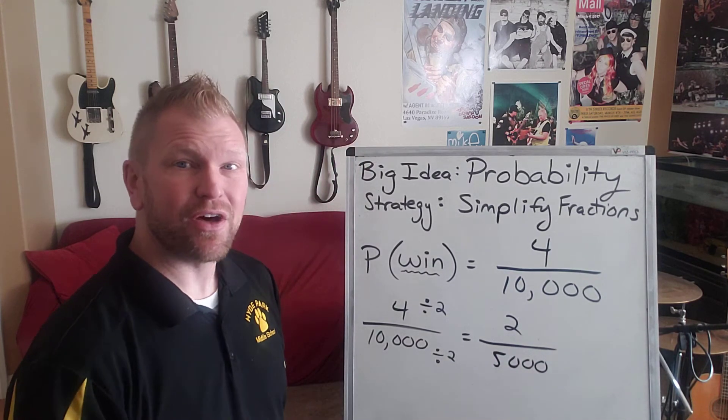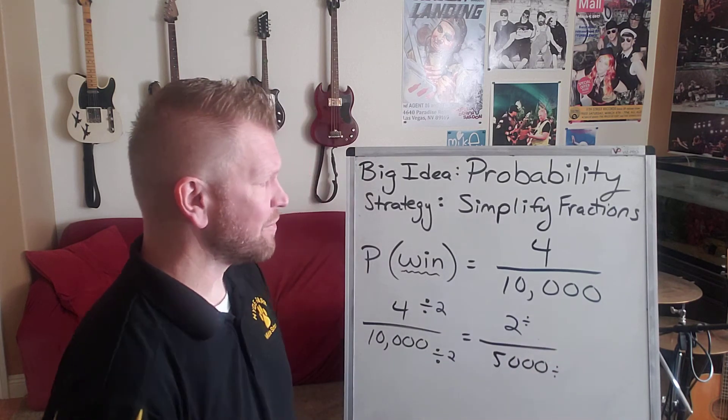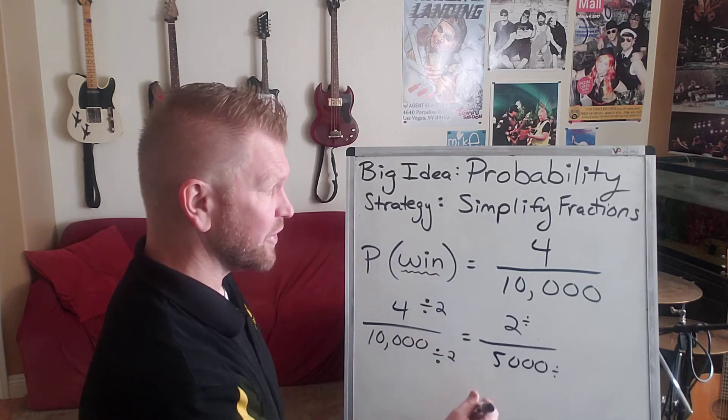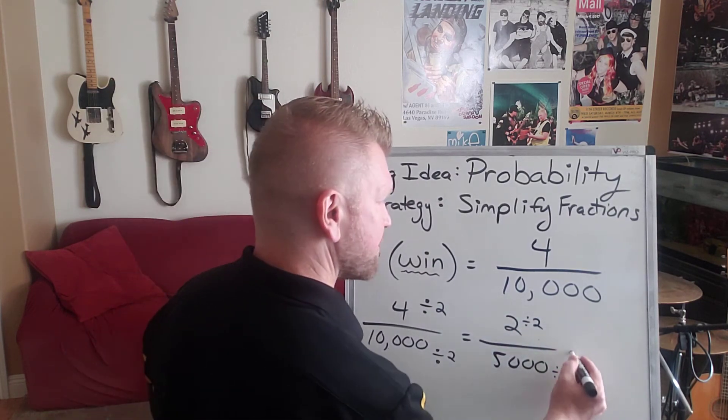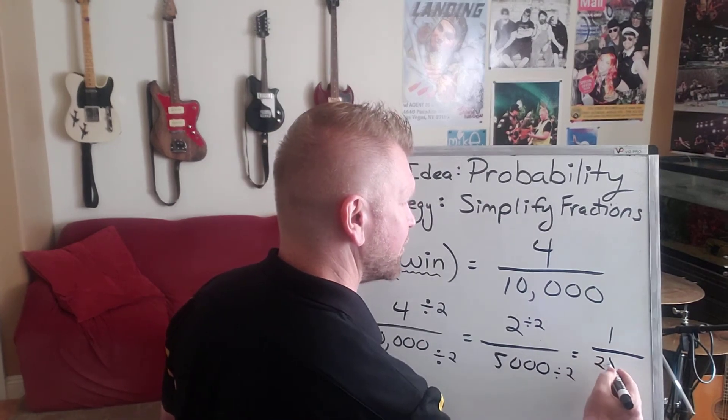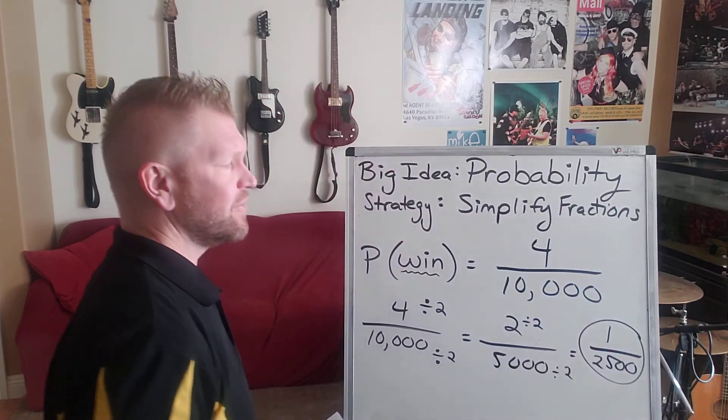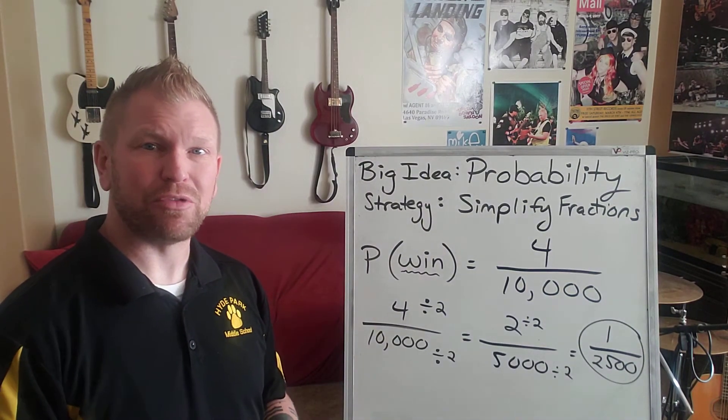But we still didn't simplify it all the way because there's another number that's divisible into both of them, a common factor. Okay, so it turns out they're both still even numbers, so we can divide them by two again. So now we get 1/2,500. And sure enough, that's the answer. They've got a one out of 2,500 chance of winning the family cruise.